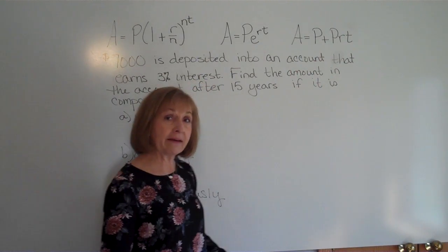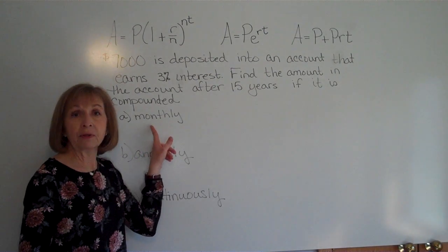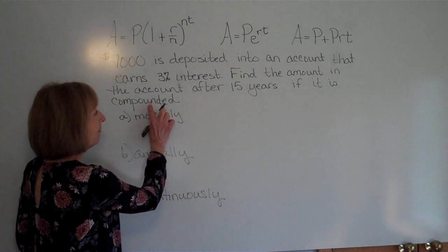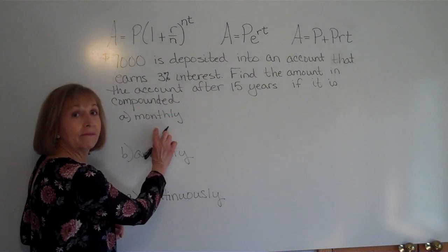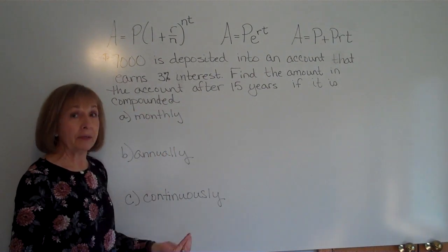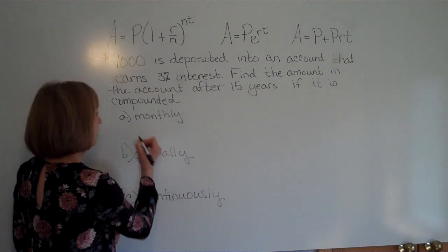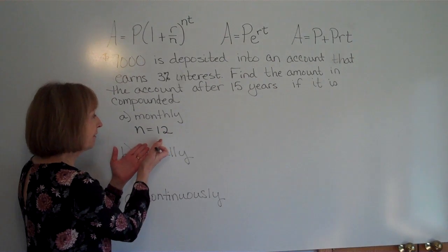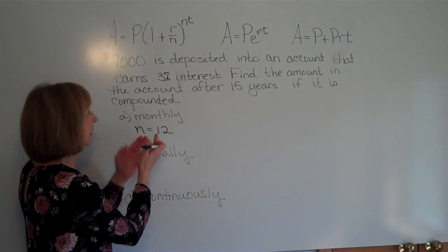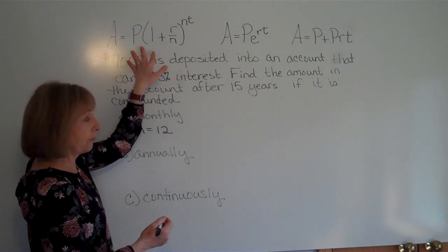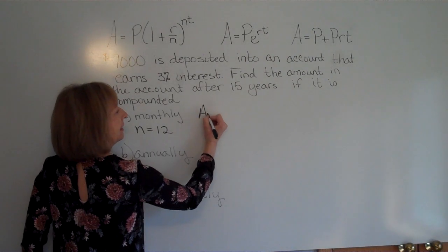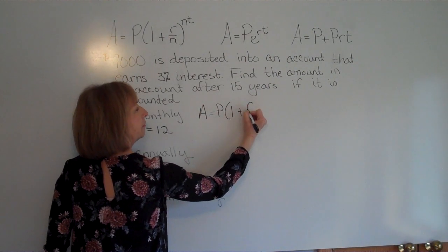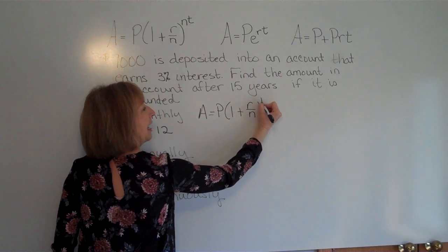For the first case — monthly compounding — we think about how many months are in a year: there are 12, so N equals 12. Since we have a specific number of compounding periods, we use the formula A equals P times the quantity 1 plus R over N, raised to the NT power.